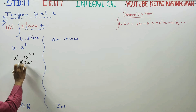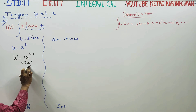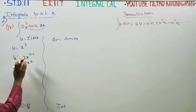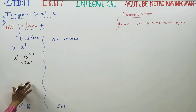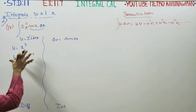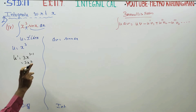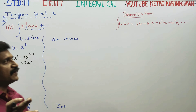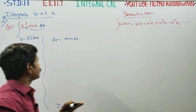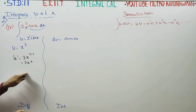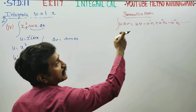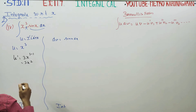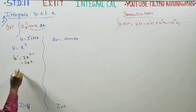The algebraic function is differentiated until it becomes constant or zero. If the algebraic function becomes constant or zero, you will use the direct formula: u·v minus integration of v·du. This is the algebraic function.